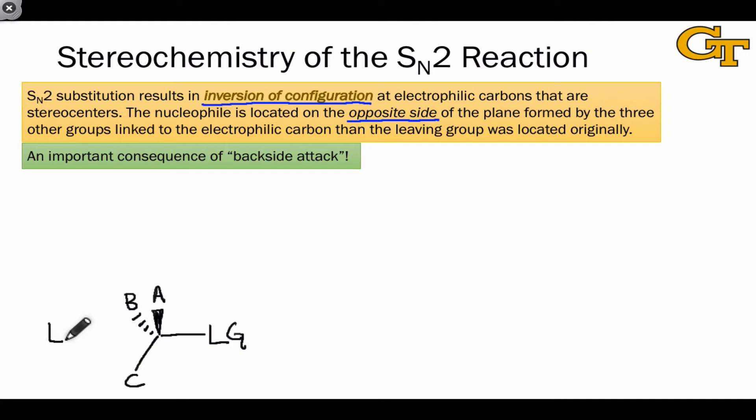So I want to look at a hypothetical example where the nucleophile is the conjugate base of the leaving group, so that, ignoring stereochemistry, we end up with a product that has the same connectivity as the starting material. This starting material contains a stereocenter with three different hypothetical groups A, B, and C linked to the electrophilic carbon along with the leaving group.